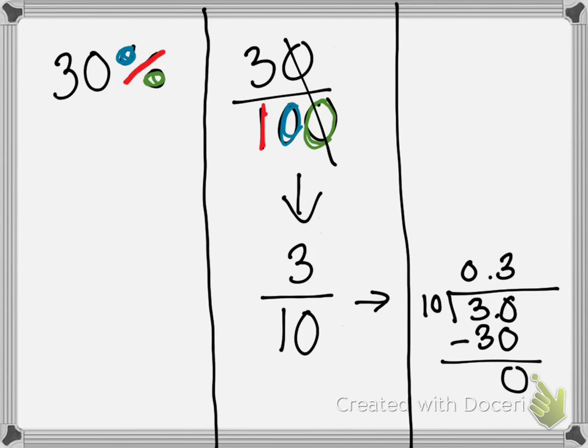The other way that we can do it is simply with our percentage, in which case we move our decimal. Since we don't see one, that means it's always at the end. Twice to the left, two little bunny hops. So we get 0.3, which is exactly the same thing that we got here.